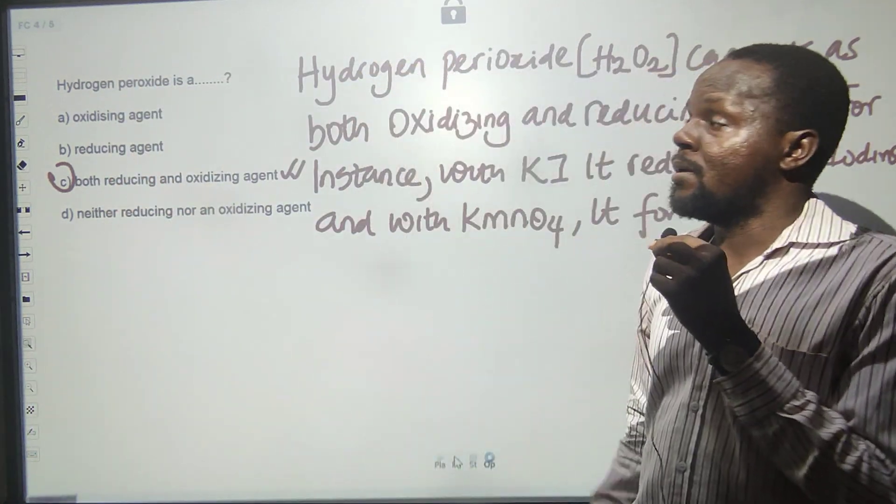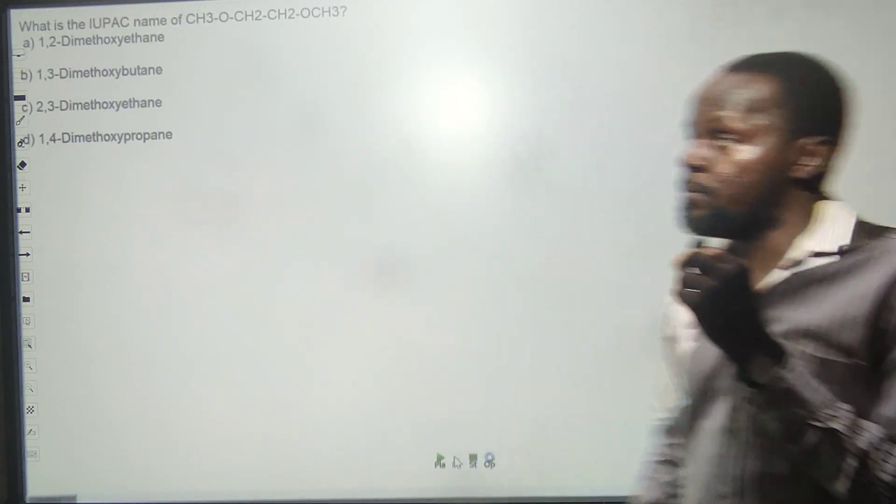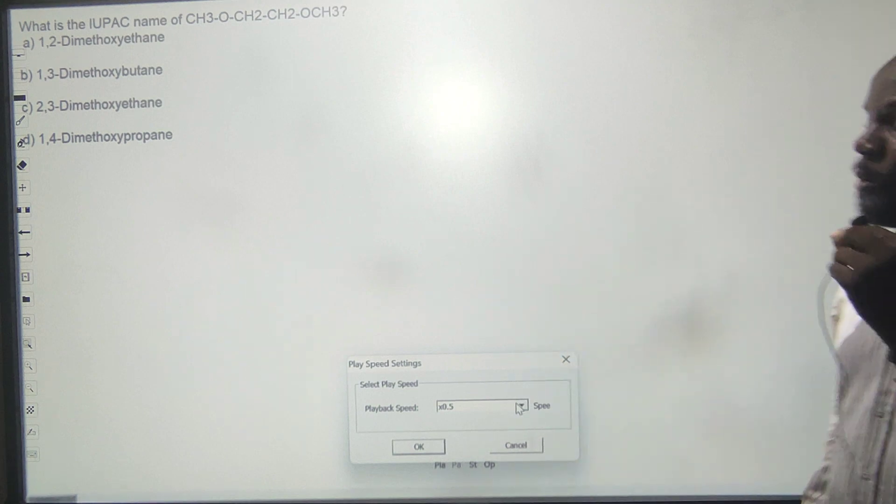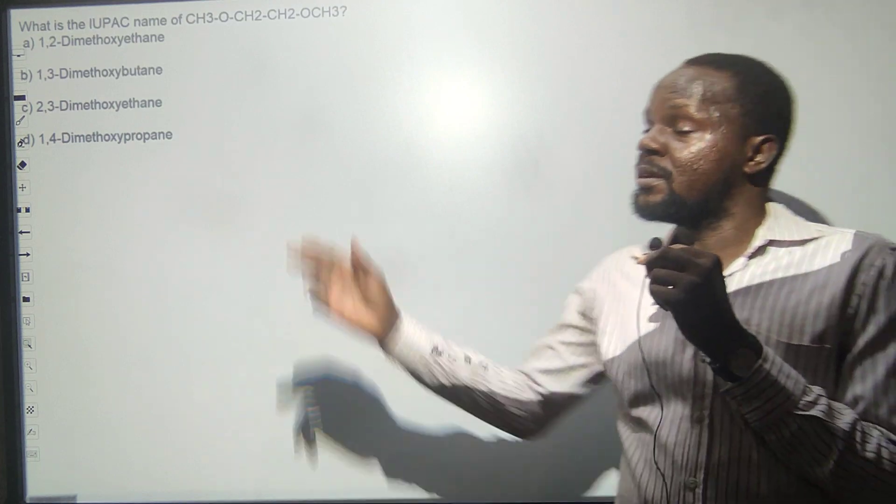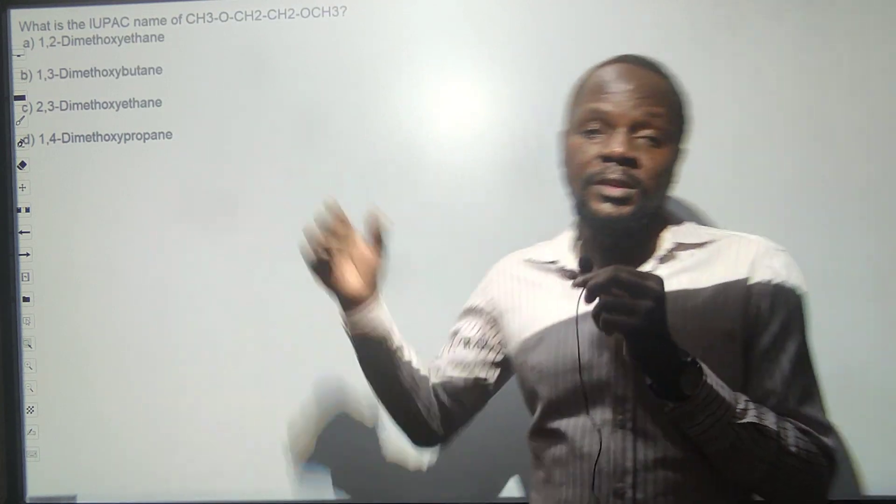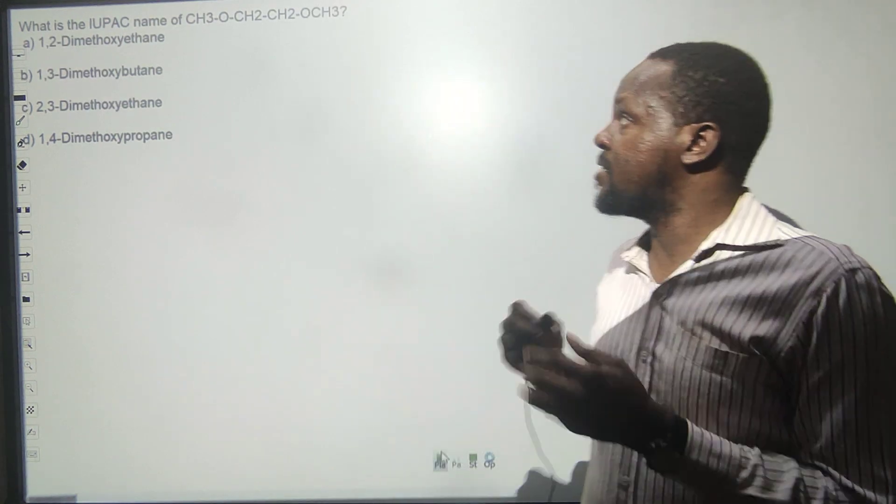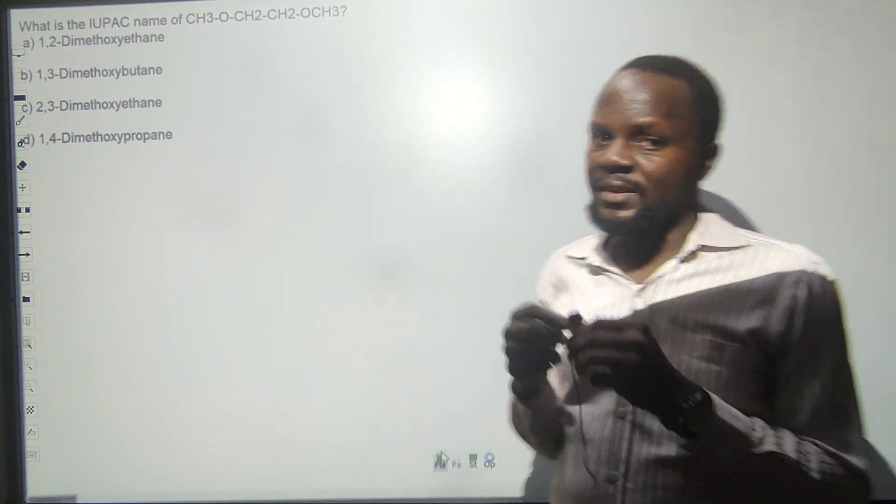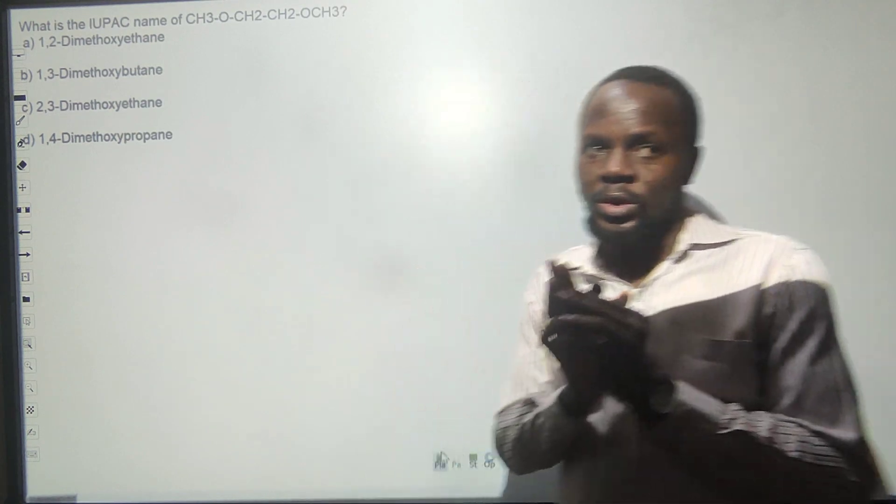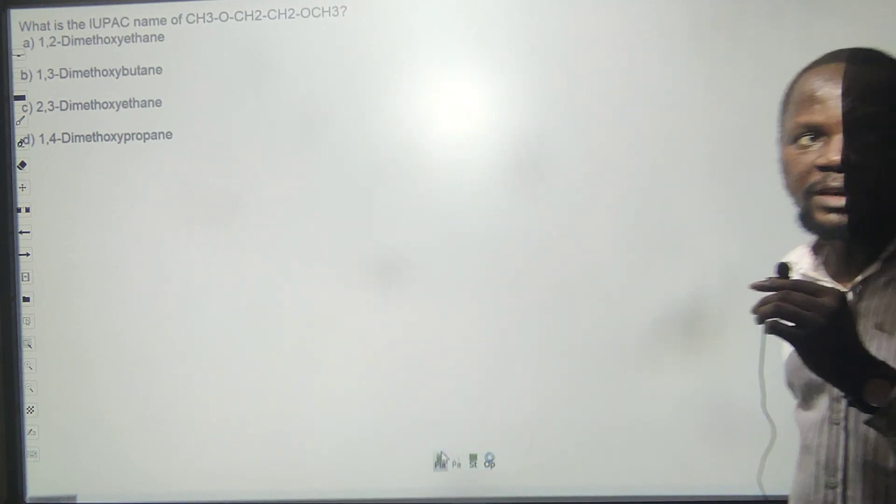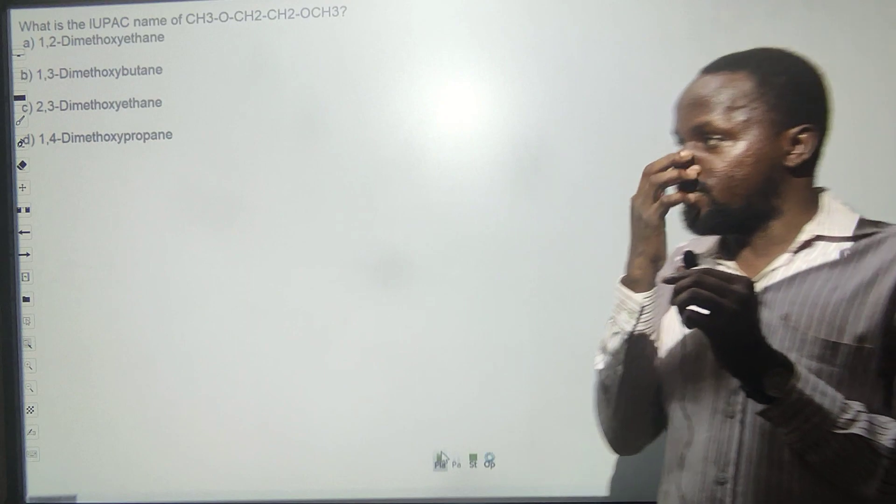The last question is: what is the IUPAC name of CH3-O-CH2-CH2-O-CH3? The first thing you have to count is the longest carbon chain - that's what teachers will tell you. Once you know the longest carbon chain, it's not necessary to be a straight chain, but this one has a straight chain. The next thing is to check if there's a functional group. Yes, there is - when there is O between carbons, with O-CH3, that is called alkoxy, also known as ether.